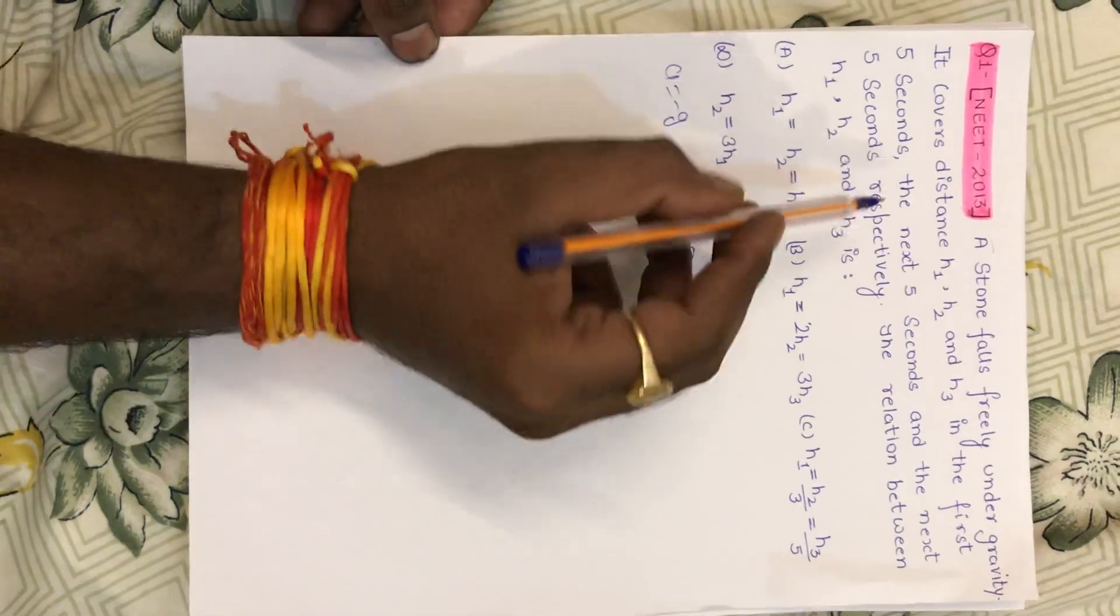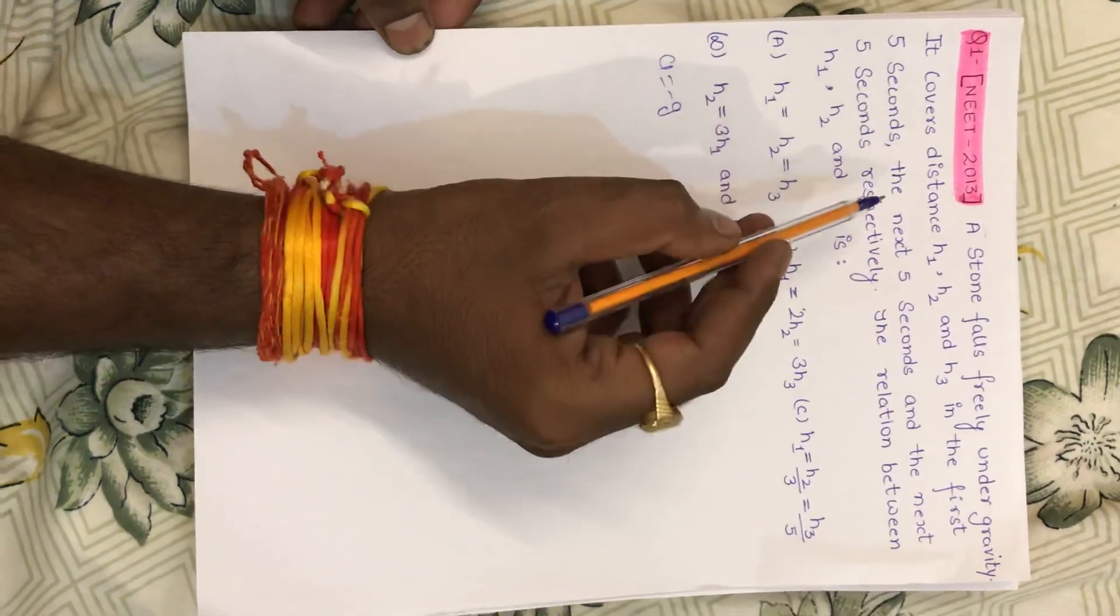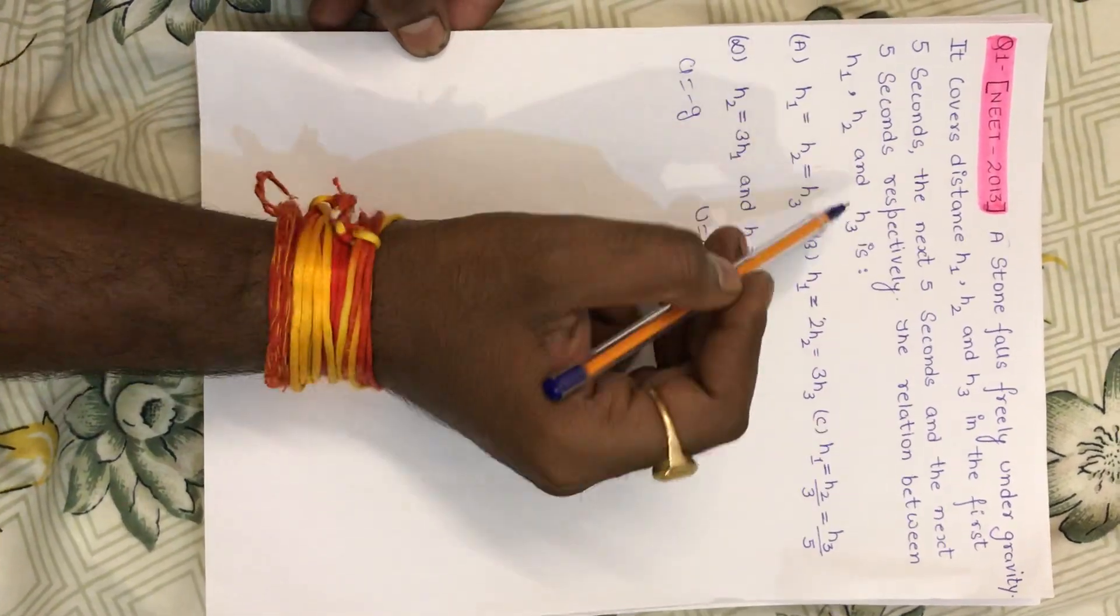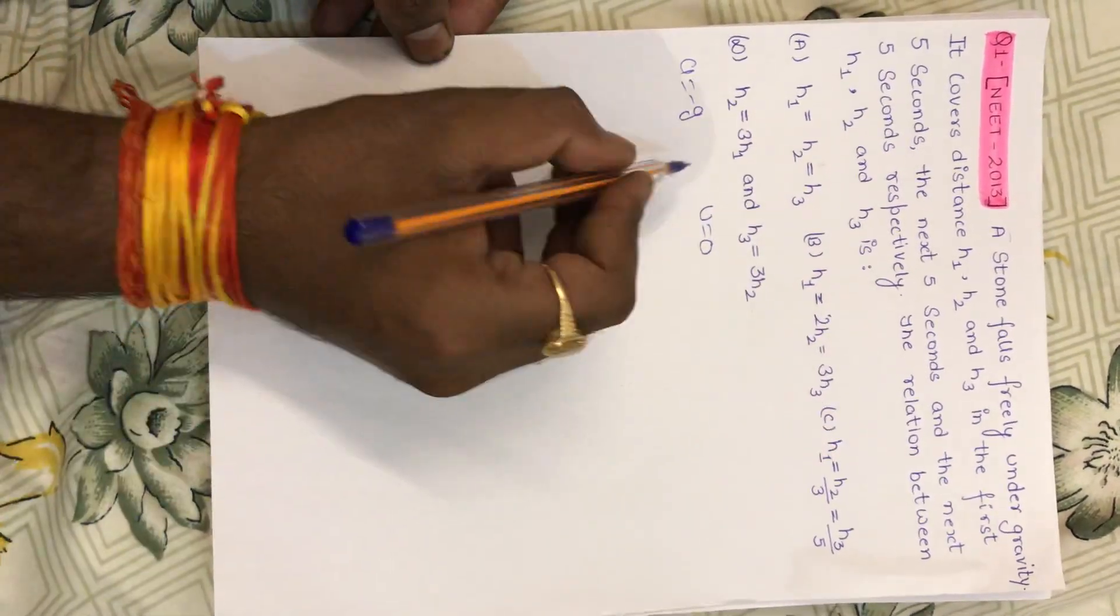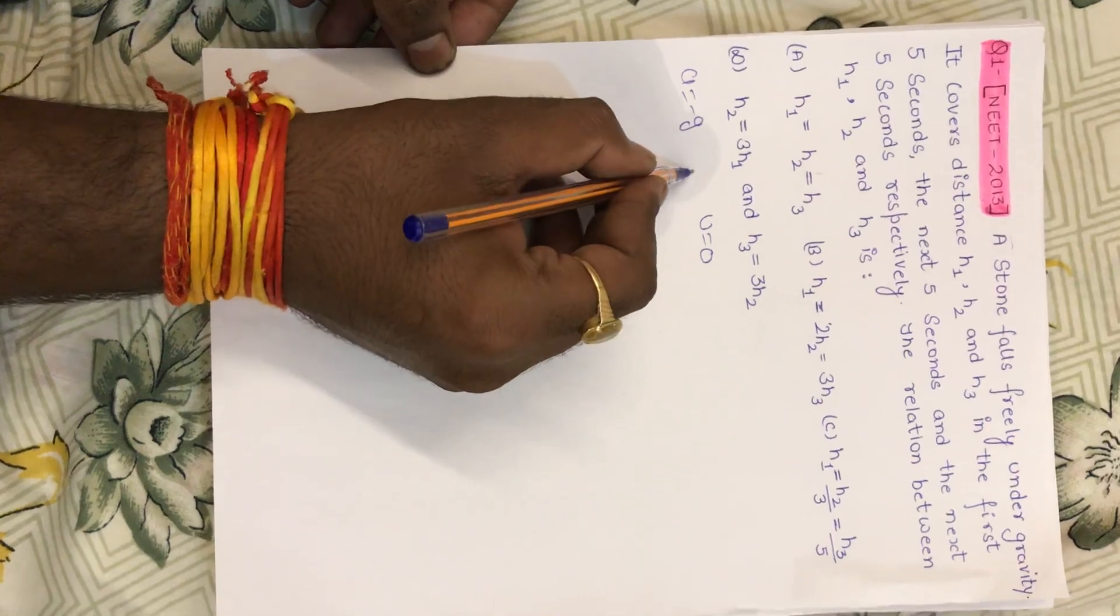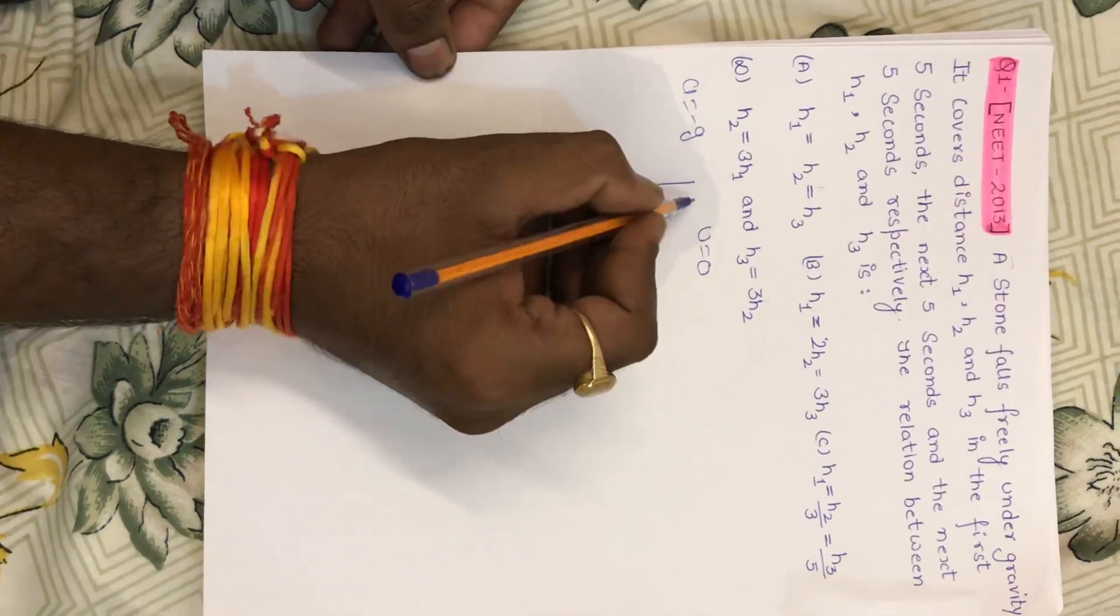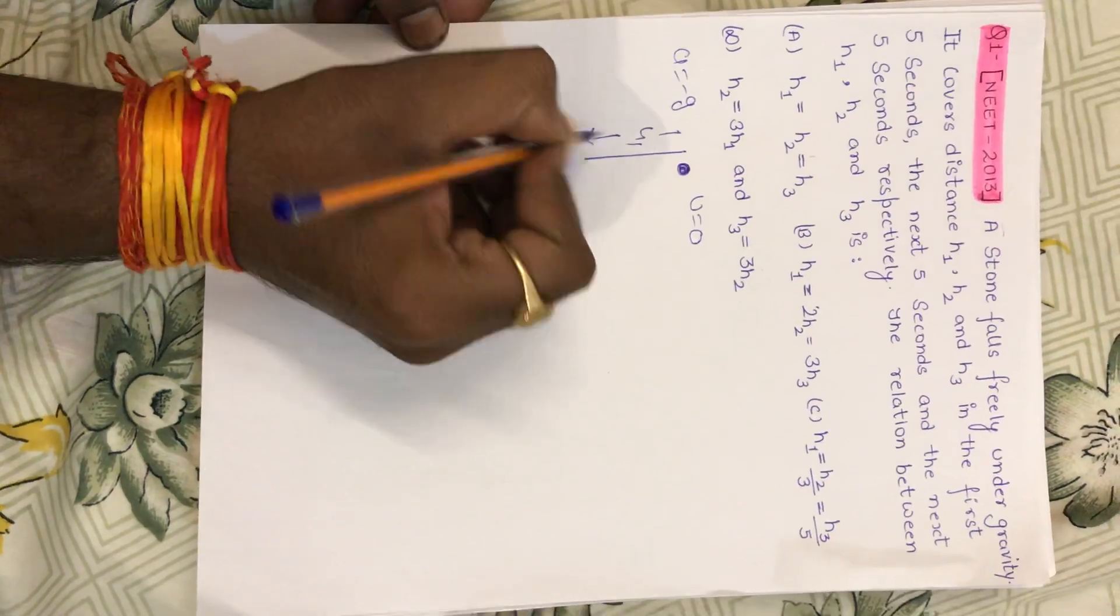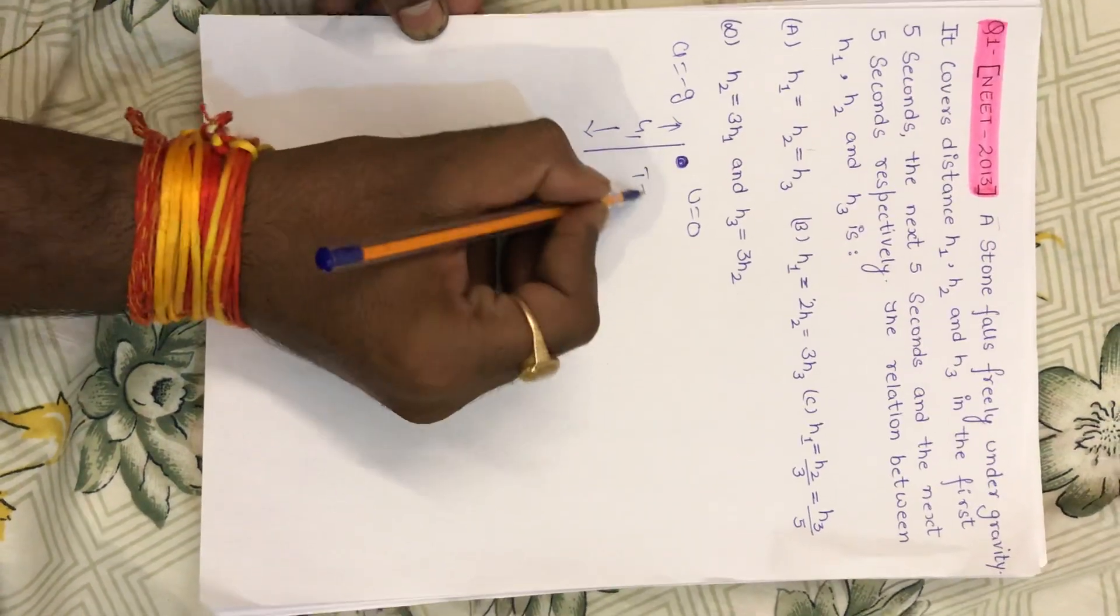It covers distance h1, h2, and h3 in the first 5 seconds, the next 5 seconds, and the next 5 seconds respectively. First, h1 height is covering how many seconds? 5 seconds.